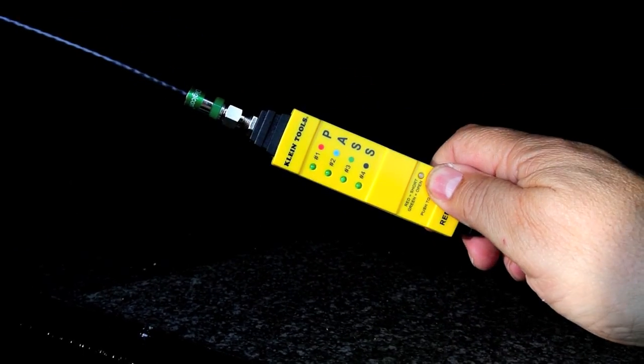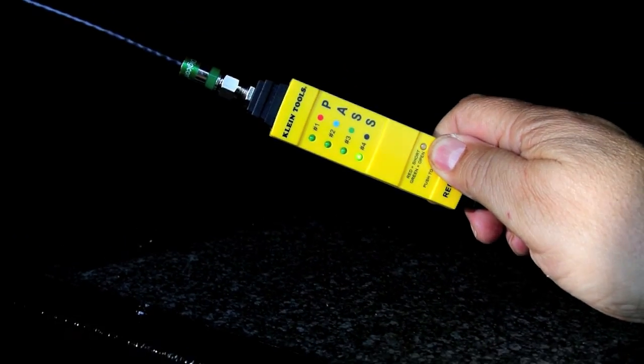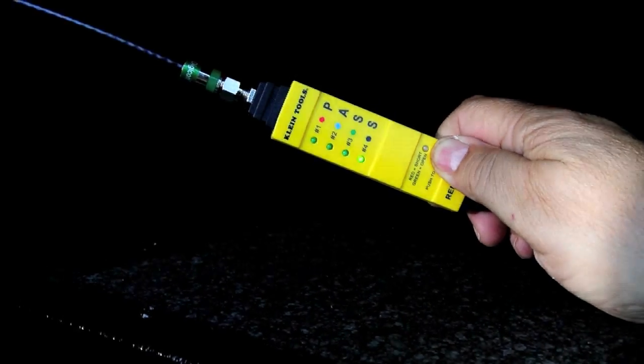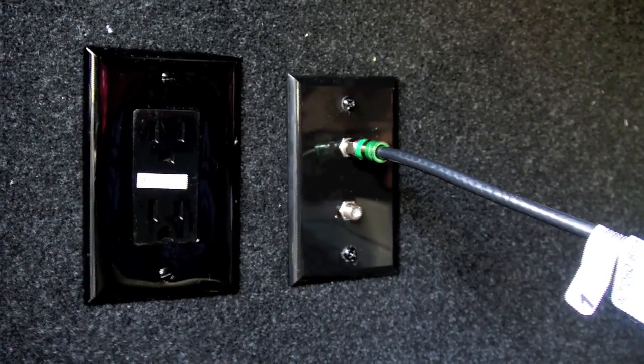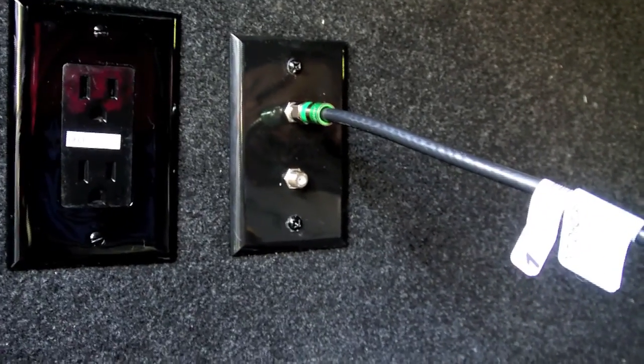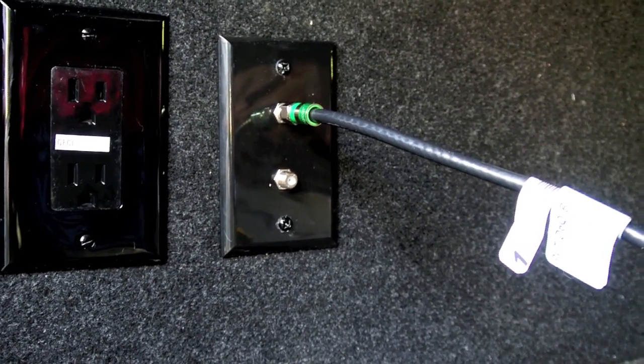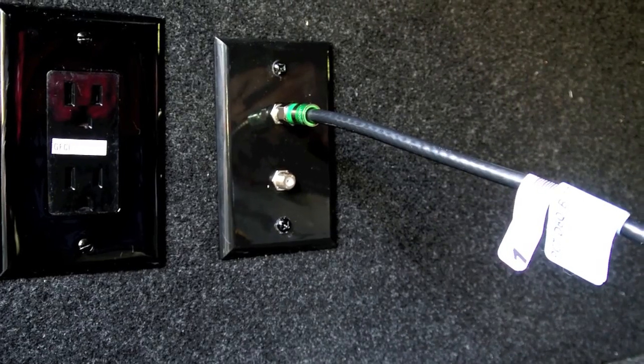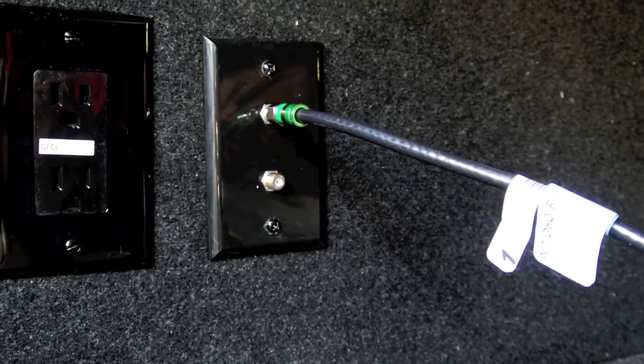So I've got it connected and I push the button and I can see that LED number four is lit which is black. So this connection here goes to the black terminator on the other side. And all I got to do is just repeat that process with all the other connectors that I find in the rig and then I'll be able to map out where all the coax connections go.